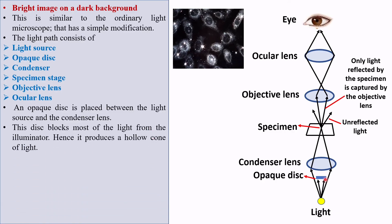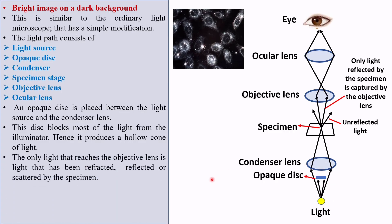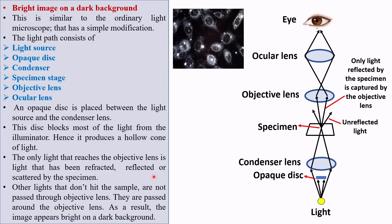The opaque disc is placed between the light source and condenser lens. This disc blocks most of the light from the illuminator, producing a hollow cone of light. The only light that reaches the objective lens is light that has been reflected or scattered by the specimen. Other light that doesn't hit the sample is passed around the objective lens. As a result, the image appears bright on a dark background.